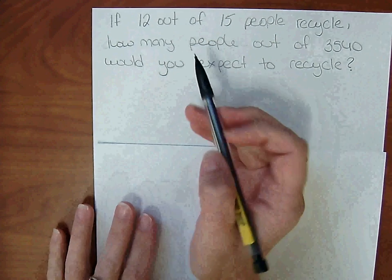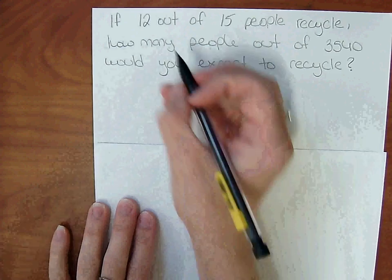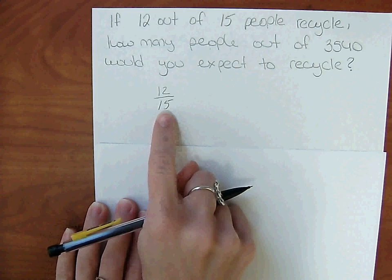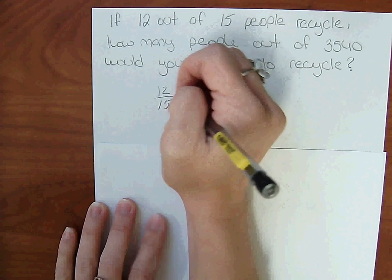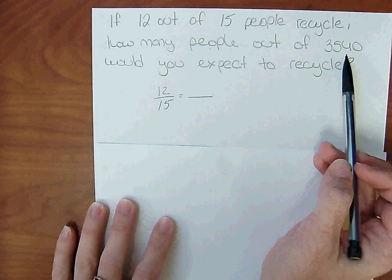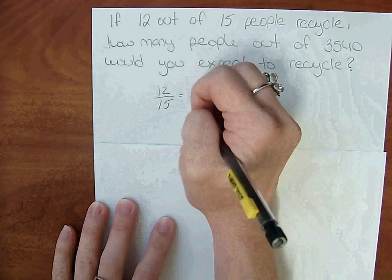Same way. Start by making that a fraction: 12 out of 15 people. 12 out of the total number of people will recycle. So set up your proportion. And our total here is 3,540, so we'll put that in the denominator.